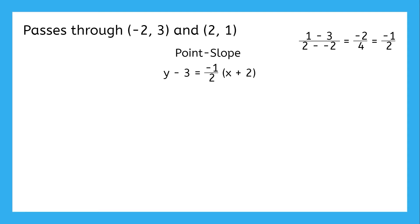But what if we want it in slope-intercept or standard form? The defining feature for slope-intercept form is that the y is isolated, so let's just solve the equation for y. Distribute the negative one-half and then add three to both sides. The slope-intercept form for this equation is y equals negative one-half x plus two.